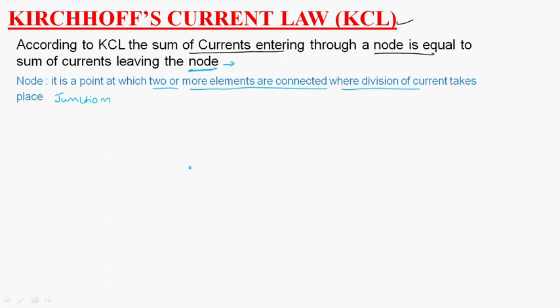Now let us assume a junction point. Towards this point, there are different currents flowing. Let us say these are I1, I2, I3, and I4. These currents are entering this node, and I5 and I6 are leaving the node.